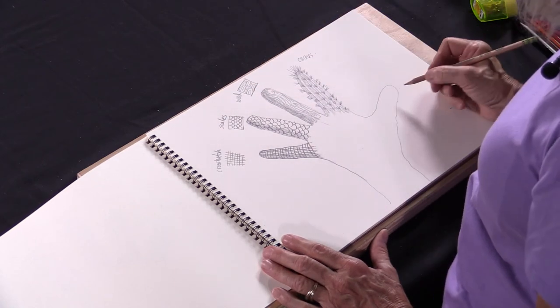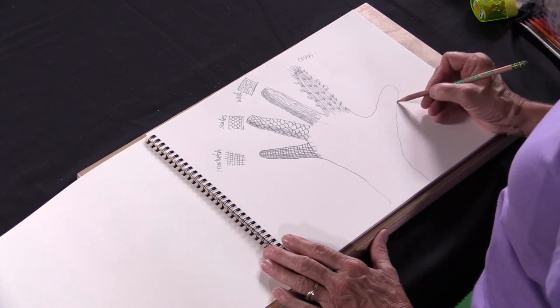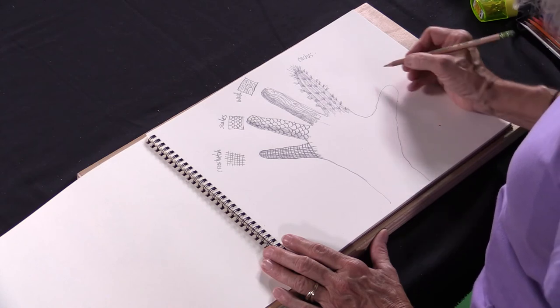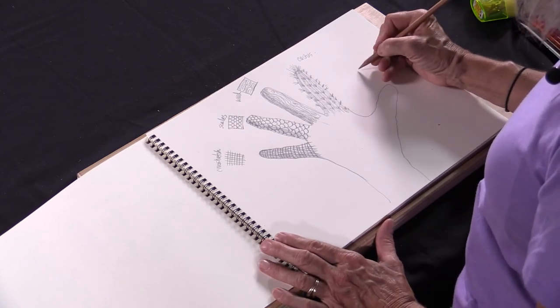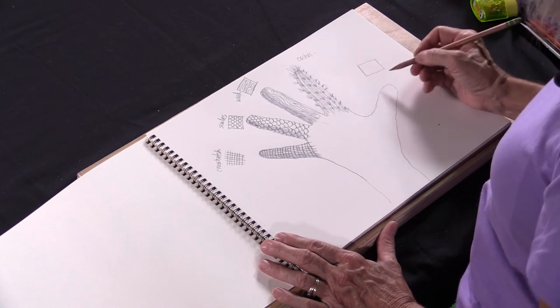I forgot to label that one. The last one, let's see, what was it? Ah yes, I think it's fur. So with fur, when we draw fur, it's good to start at the bottom of the fur, down here.